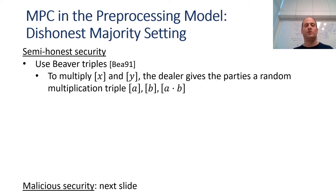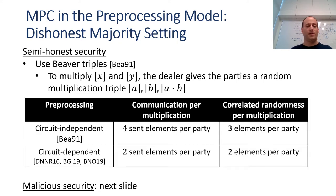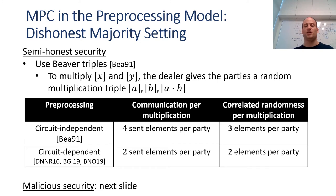The standard approach for MPC in the preprocessing model is to use Beaver triples. Here the dealer gives the parties shares over random multiplication triples, and these are used to multiply shared values in the online execution. In this table, we give the exact communication cost and the exact amount of correlated randomness per multiplication with this approach. As can be seen, there are two variants: one with circuit-independent preprocessing and one with circuit-dependent preprocessing. When allowing circuit-dependent preprocessing, the dealer knows the structure of the circuit, and therefore this can be used to reduce the cost slightly.